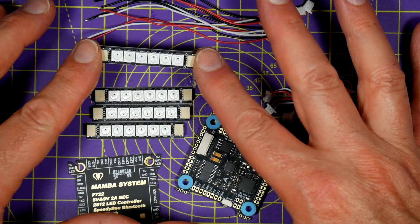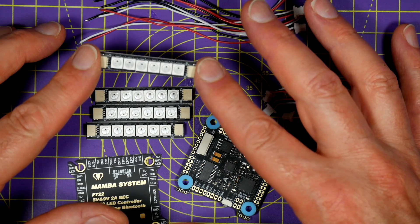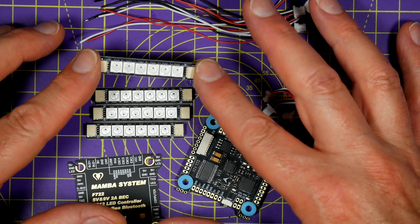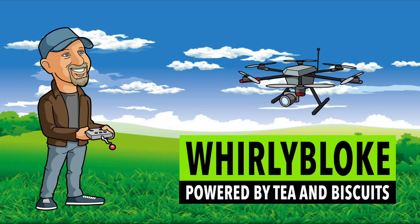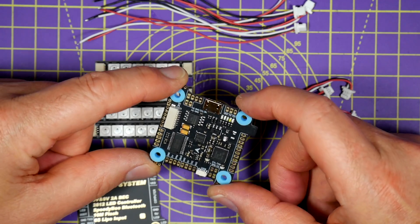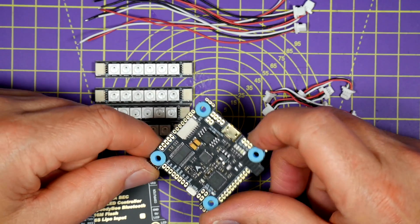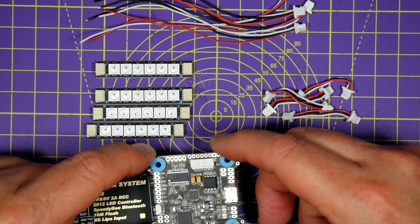Hello and welcome to the Wally Bloke channel. Today I'm going to be looking at these Mamba flashbang LED boards. When I reviewed this Mamba F722 board recently, it comes configured with a load of pads that allows you to connect the flashbang board onto it.